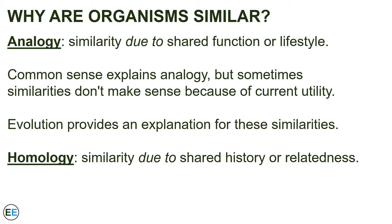In the examples we just saw, the noses of those species that ate ants and termites have the same shape for a pretty obvious reason: poking around in crevices and holding a long tongue that could poke into small tunnels. The reason for the similarity of the spikes was likewise obvious. Sometimes these similarities don't make sense because of current utility, however — common sense sometimes fails to provide an explanation for the similarity. In these cases, the process of evolution provides an explanation.